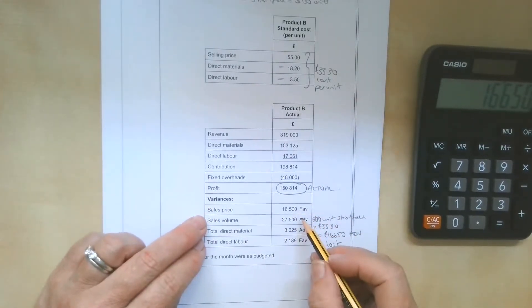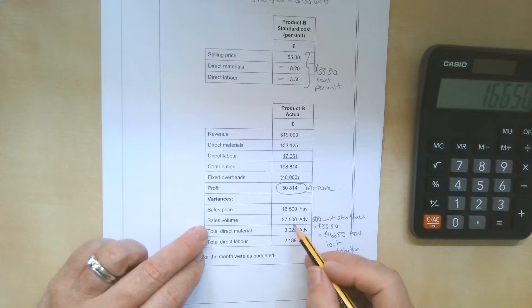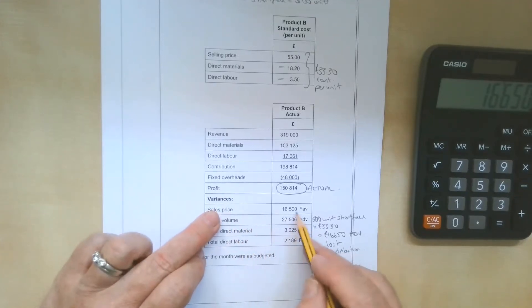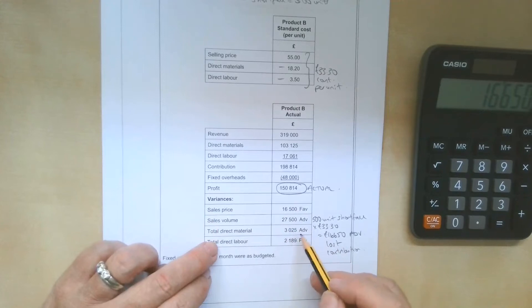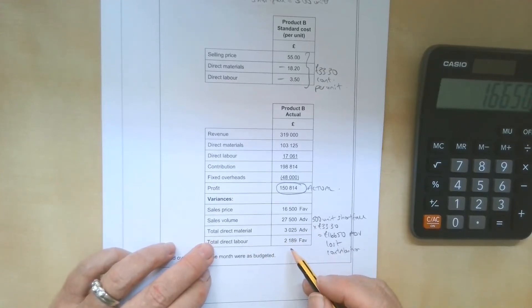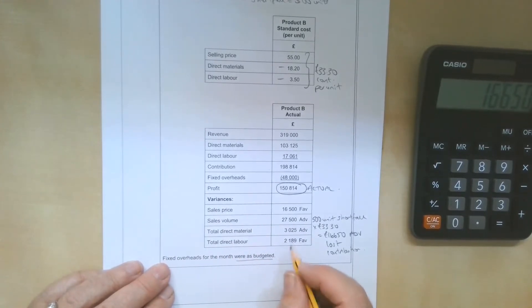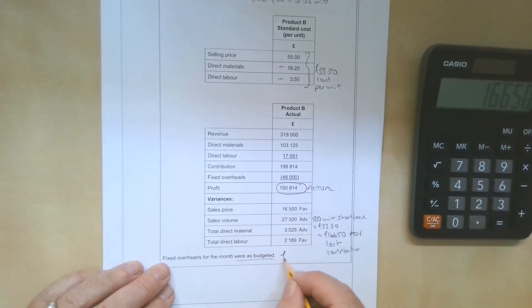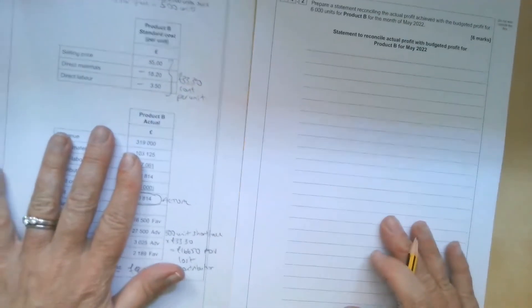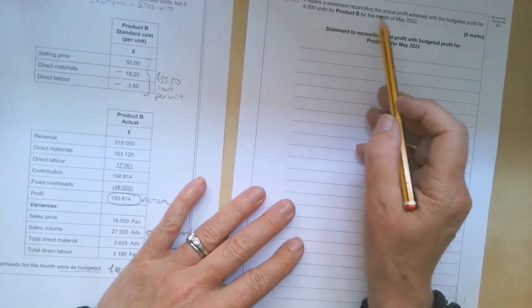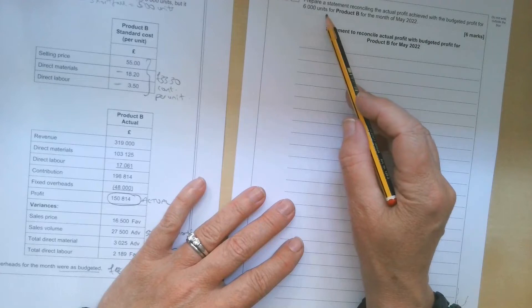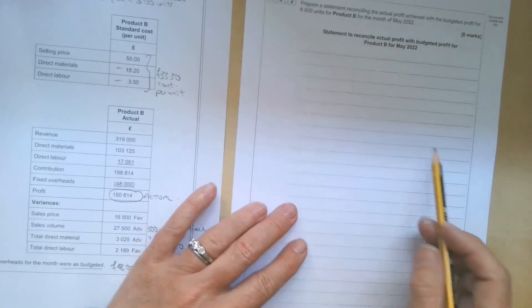Another word about variances when we are reconciling profit, then a favourable variance will increase profit. An adverse variance will reduce it. If we're asked to reconcile budgeted cost with actual cost, and we obviously wouldn't include the sales variances, but an adverse variance there will be added to the budgeted cost because it will increase the budgeted cost, whereas a favourable variance would be deducted. So make sure you do it the right way around. Fixed overheads for the month were as budgeted, and it tells us here that the budgeted overheads were £48,000. All it's asking us to do is prepare a statement reconciling the actual profit achieved with the budgeted profit for 6,000 units for product B for the month of May 2022.